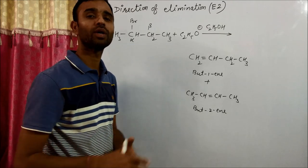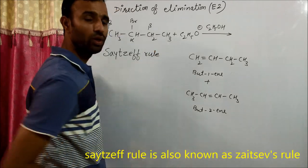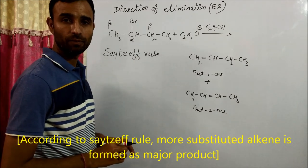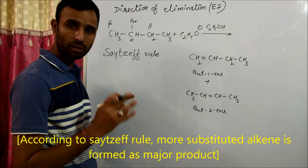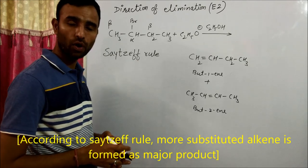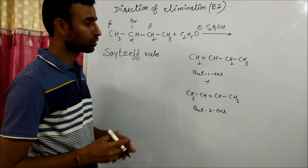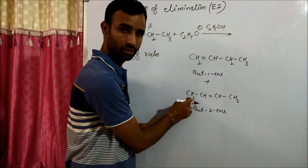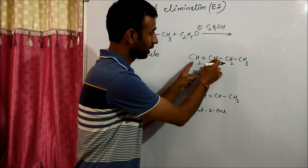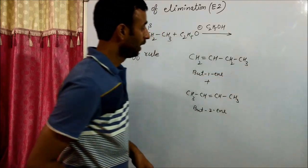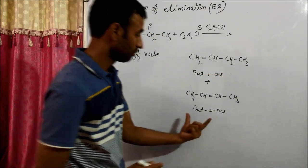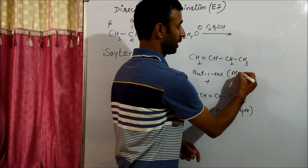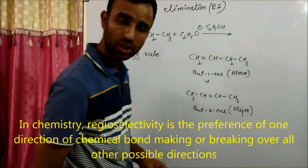Now we have a rule that is called Zaitsev's rule, sometimes we can call it as Z-7 rule. In Zaitsev's rule, highly substituted alkene is formed as the major product. So out of these two, which one is highly substituted? Double bond attached to two methyl groups here. Double bond attached to this is only ethyl group.